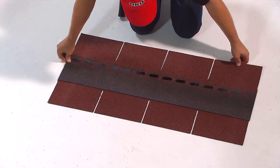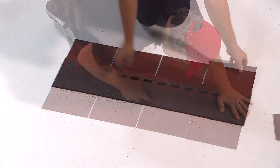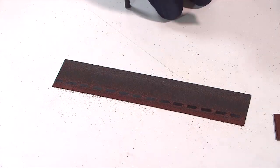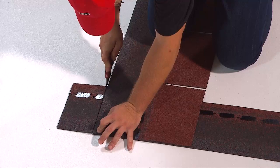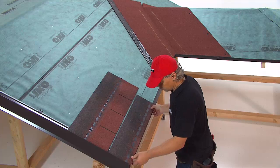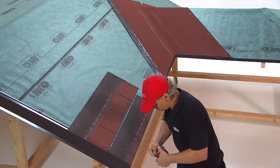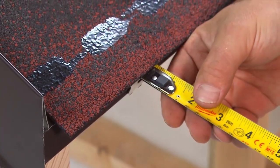We make the starter strip by cutting the tabs of the shingles. To ensure that the seams of the starter strip do not coincide with those of the first row of shingles, half a tab is cut off the starter strip. The resulting strip should hang roughly one centimetre over the eaves.